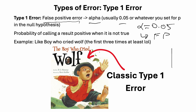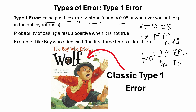So if you remember the 2x2 table, you have your gold standard on the x-axis and the test on the y-axis — remember, test is tall. Then you have your true positives, false positives, false negatives, and true negatives. Alpha will be your false positive rate.